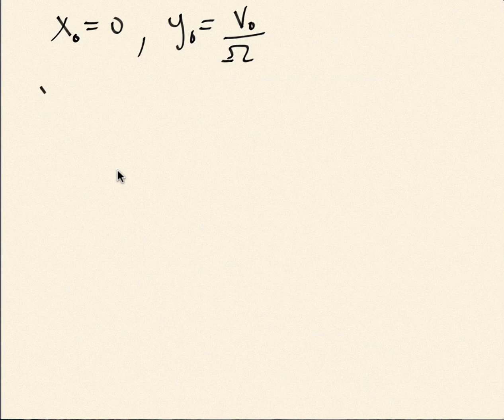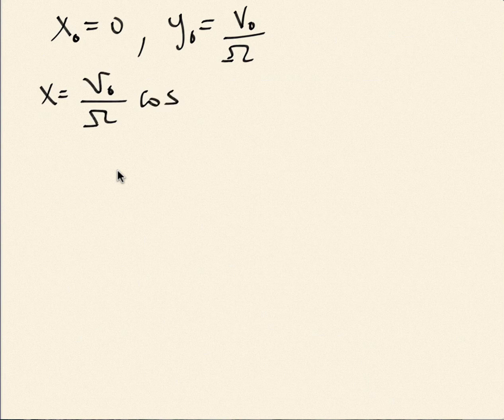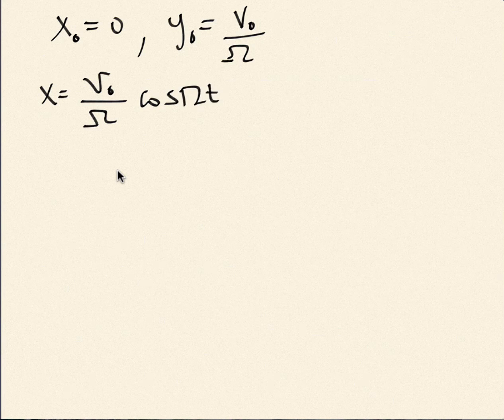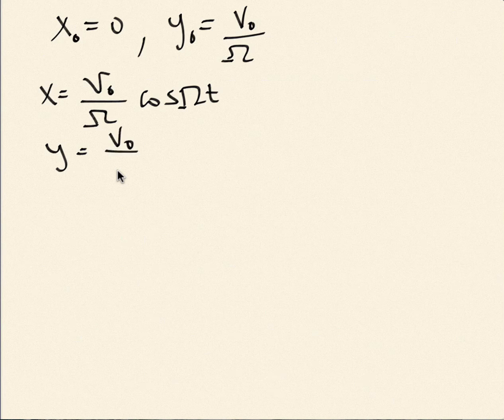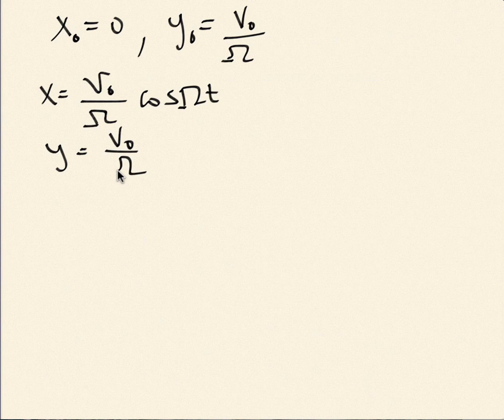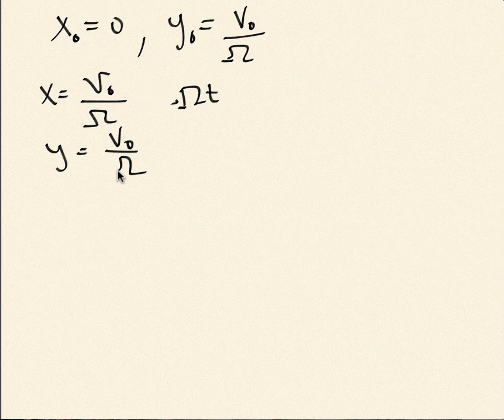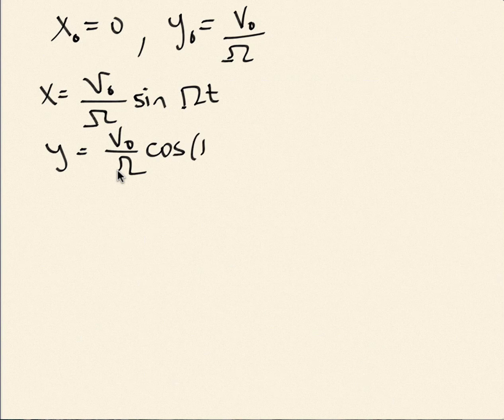If I do that, then what I get is the following. I get x is equal to v0 over omega times cosine of omega t. And y is v0 over omega times, oops, sorry, that's a sine here, not cosine. Sine, and this is cosine. Sine.